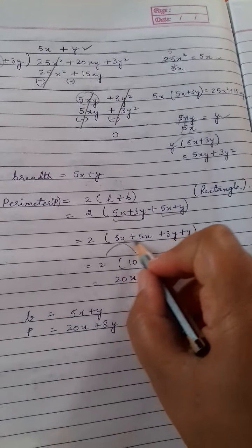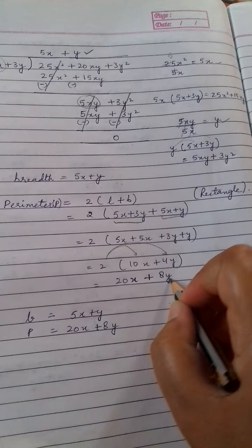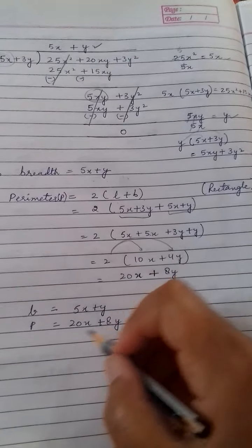Now multiply this two inside. So you will get 20x plus 8y. Clear? This is your perimeter.